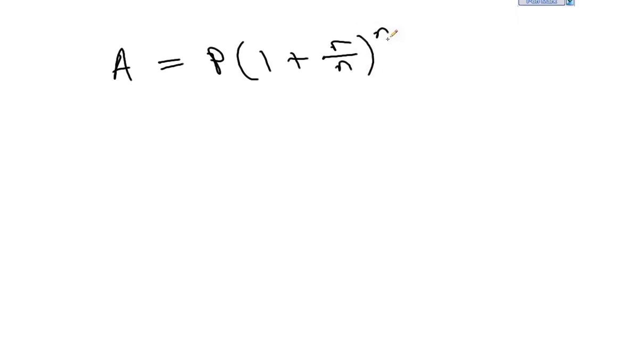I'll define all these little pieces here. So A is the accumulated amount. This is sometimes referred to as the future value, which that's what we'll call it.